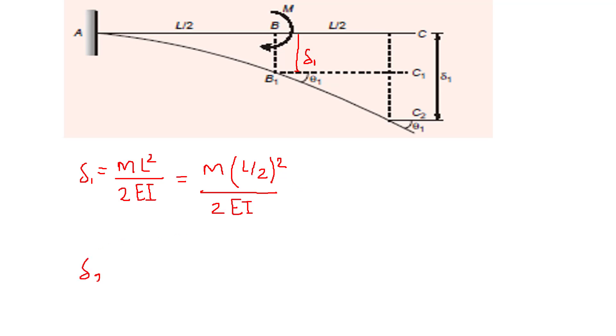In order to get delta two, delta two is this deflection. Our actual deflection at point Q, the free end, this will be our actual delta, our answer. Delta actual will be delta one plus delta two in this case.